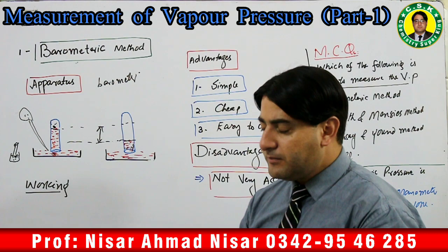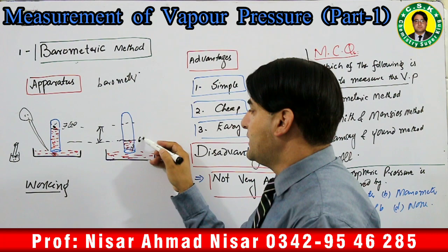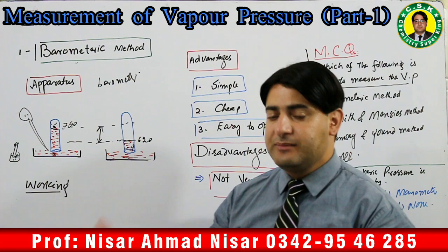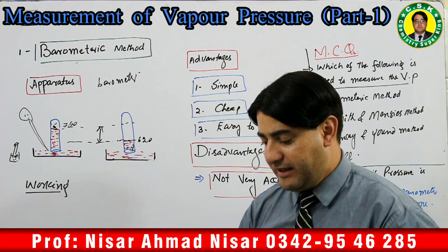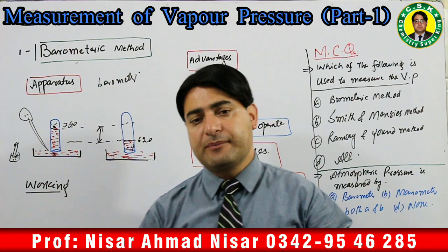Lets suppose yeh 760 tha aur yeh 620 hai, to 760 minus 620 = 140. To yeh 140 us liquid ka vapor pressure hoga us temperature par. Yeh hamare paas liquid ka vapor pressure maloom karne ka pehla method hai.